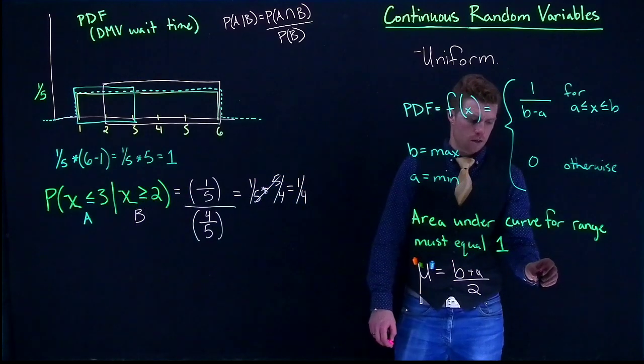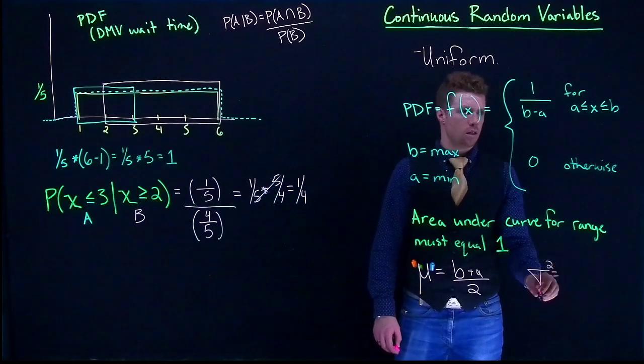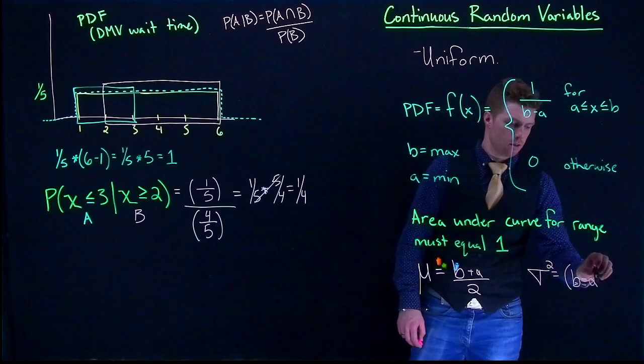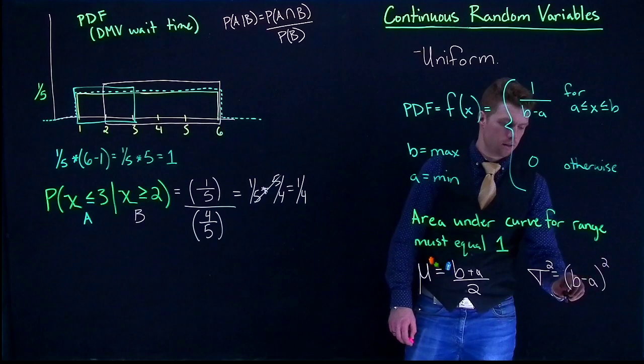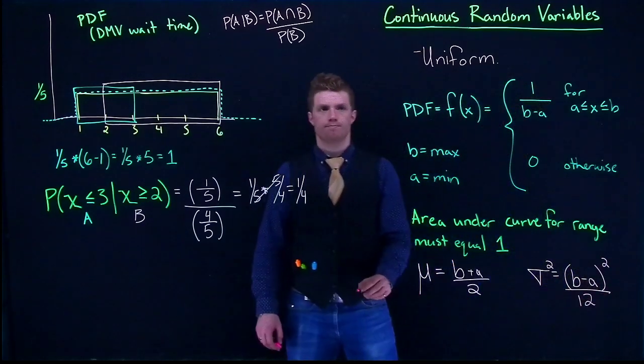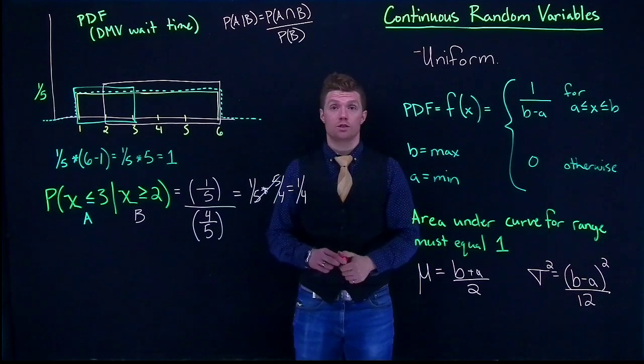Our variance is just equal to b minus a squared divided by 12. And really, in a nutshell, that's our uniform distribution.